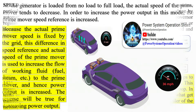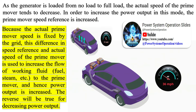As the generator is loaded from no load to full load, the actual speed of the prime mover tends to decrease. In order to increase the power output in this mode, the prime mover speed reference is increased. Because the actual prime mover speed is fixed by the grid, this difference in speed reference and actual speed of the prime mover is used to increase the flow of working fluid — fuel, steam, etc. — to the prime mover, and hence power output is increased. The reverse will be true for decreasing power output.